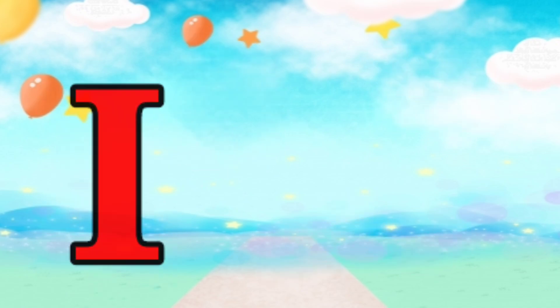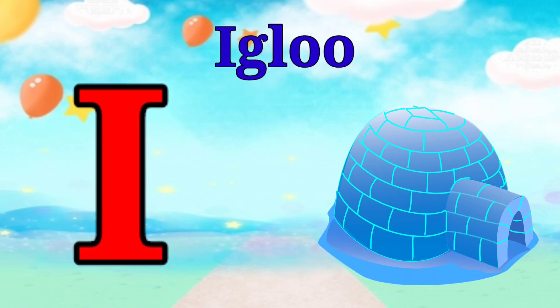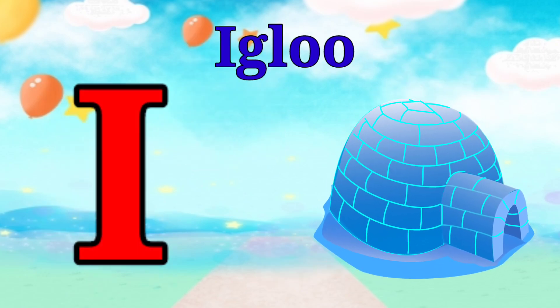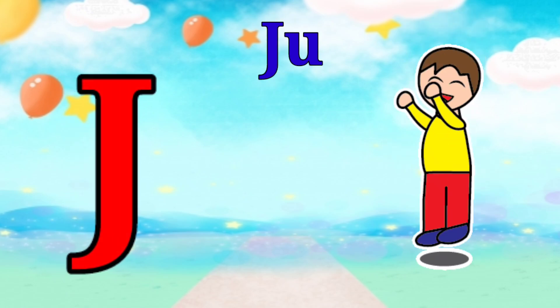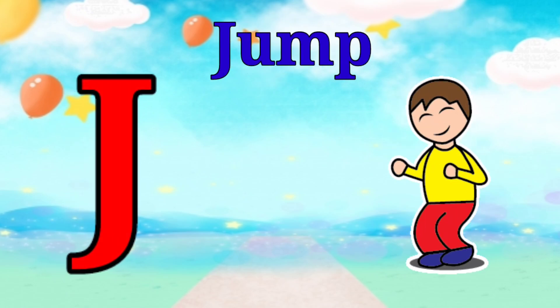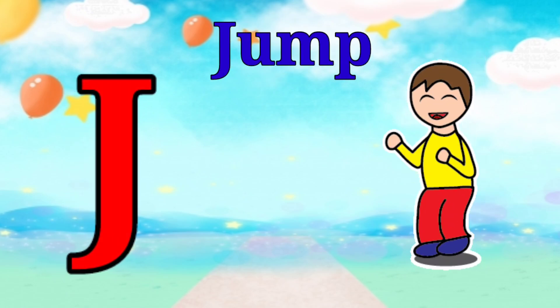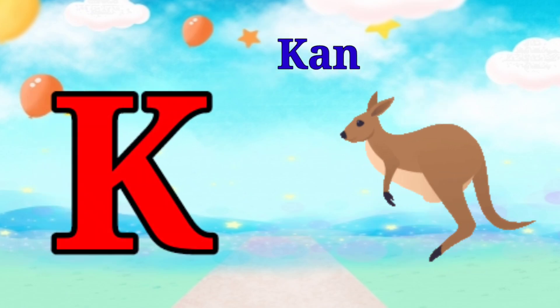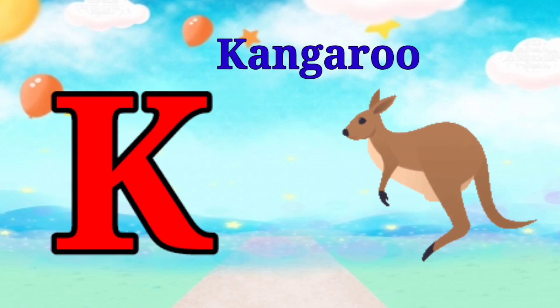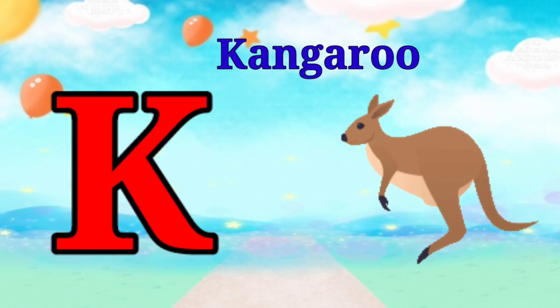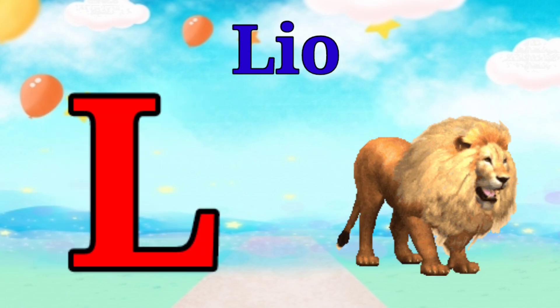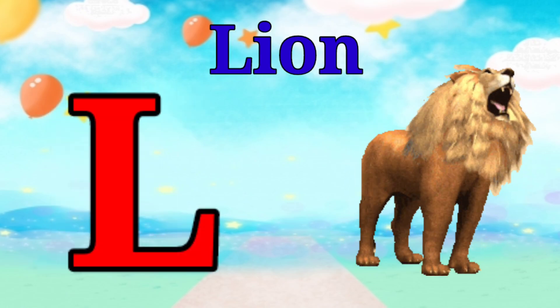I is for igloo, i-i-igloo. J is for jump, j-j-jump. K is for kangaroo, k-k-kangaroo. L is for lion, l-l-lion.